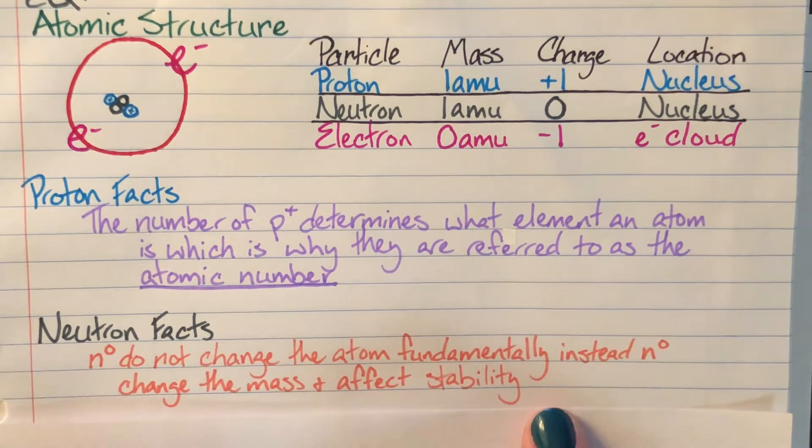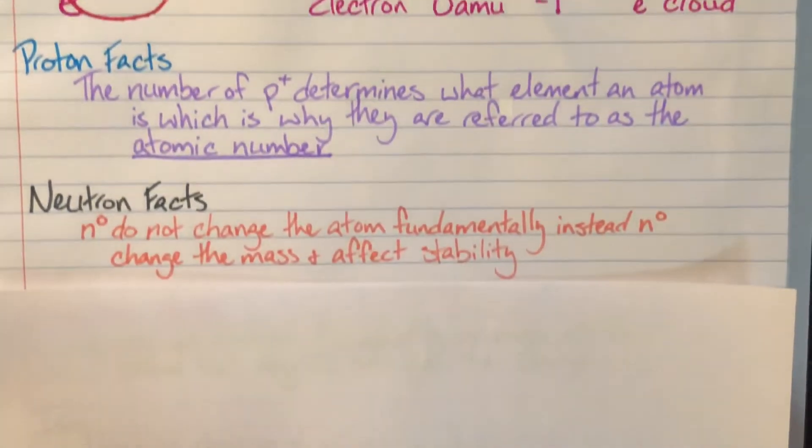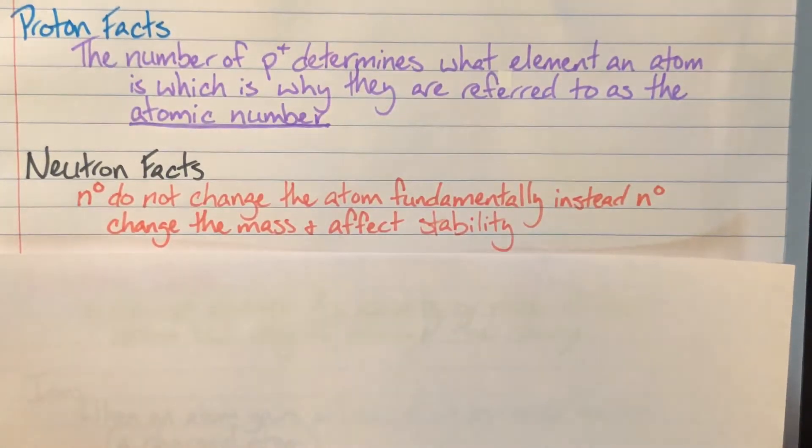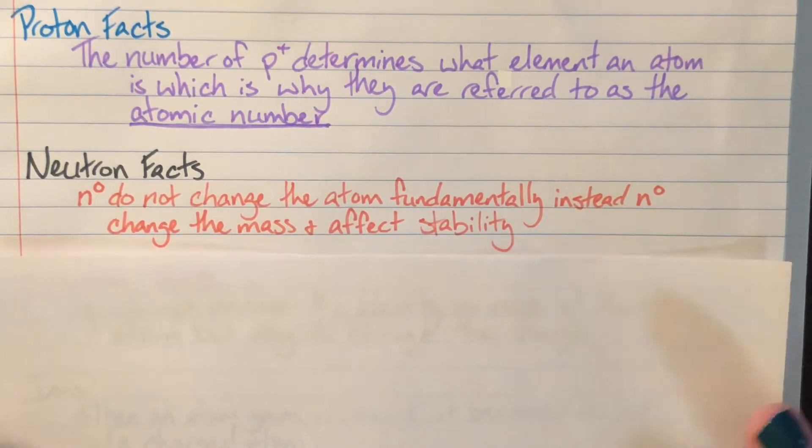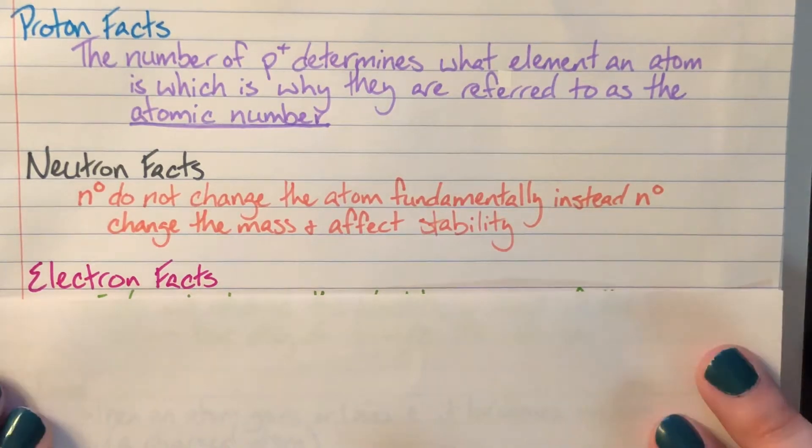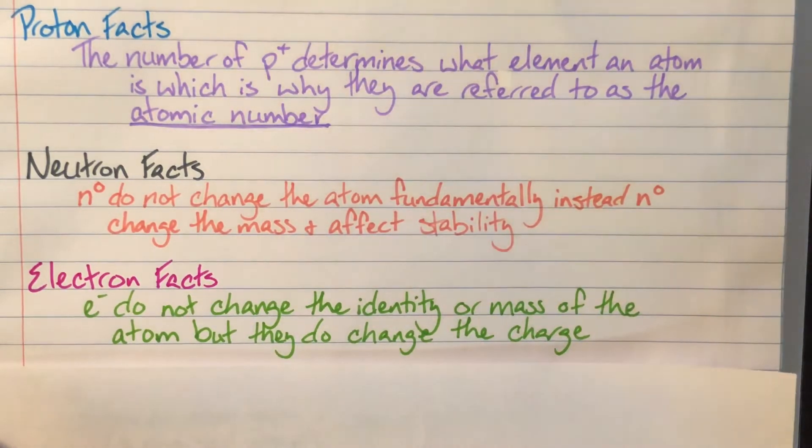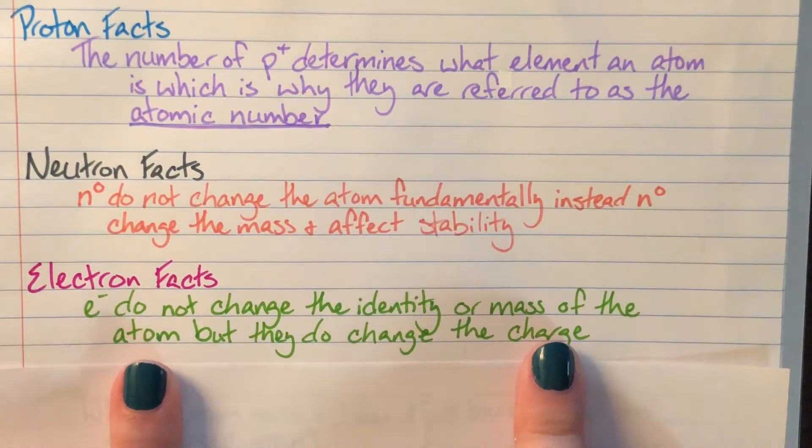They do not change who I am fundamentally, nor do they change the charge. Okay. So the very last subatomic particle that we need to talk about is going to be our electrons. And so our electrons don't change the identity, just like with neutrons. Again, protons are going to be the ones, they are our atomic number. They are the ones that are very, very important.